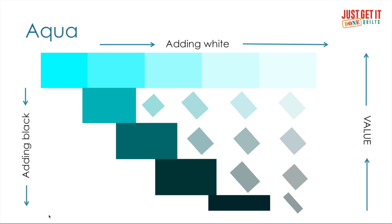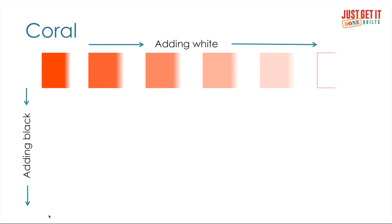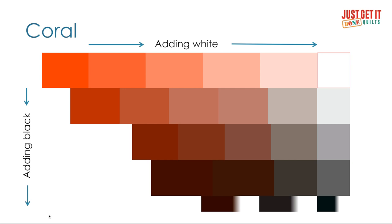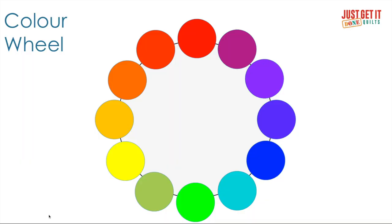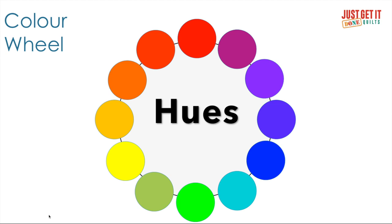It's the same with every hue. Let me show you another slice, this time with a hue I'm going to call coral. As a quilter, you need to know three things about color. One: you need to know about hue. Hues are just the colors on the color wheel — the primary colors and their combinations.